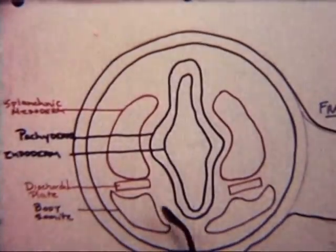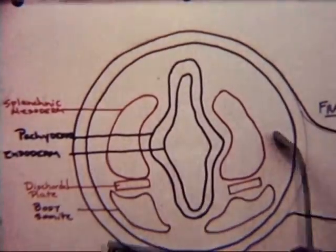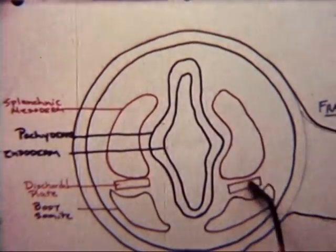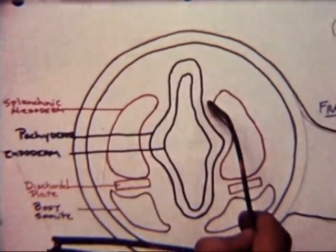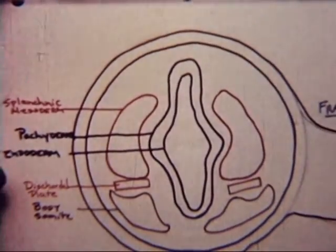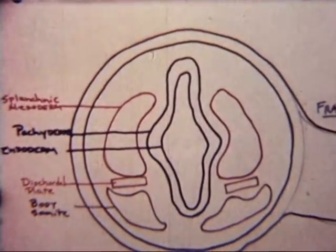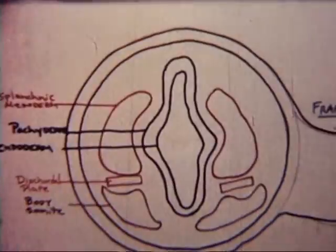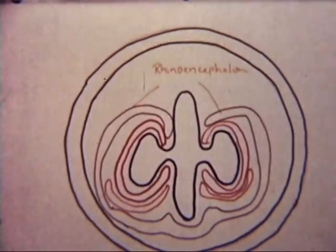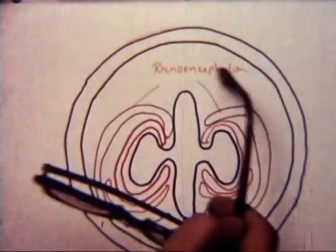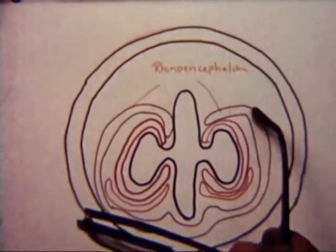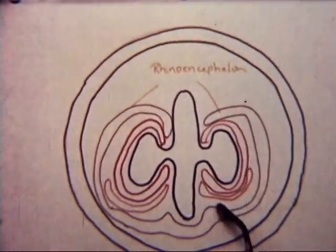The body somites, splanchnic mesoderm, and discordal plate invaginate into a pocket of dorsal mesencombe and condense to form the spherical fibrous coat of the norengiate body, which is known as the rindencephalon or the pila mater.